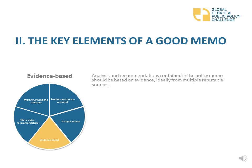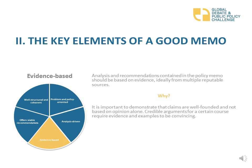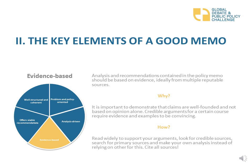Credible evidence makes a good policy memo. The analysis and recommendations contained in your policy memo should be based on evidence, ideally from multiple reputable sources. It is important to demonstrate that claims are well-founded and not based on opinion alone. Credible arguments for a certain course require evidence and examples to be convincing. Read widely to support your arguments and look for credible sources. Search for primary sources and make your own analysis instead of relying on others. It is important that you cite all sources used.